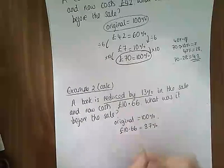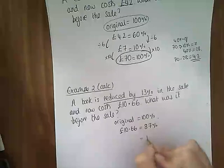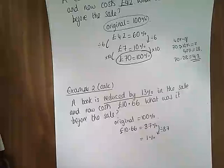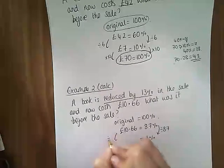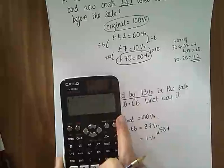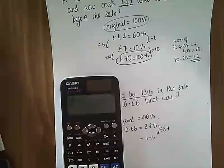Now, not so easy to get 10% here. So, I mean, we could, of course. We could divide by 8.7. But it makes more sense to find 1%. So to find 1%, I'm dividing by 87. Now, I'm not expecting you to be able to do that. You can just pop it in your calculator.